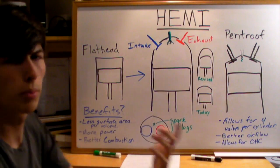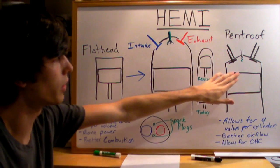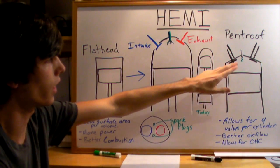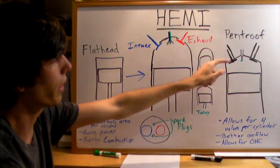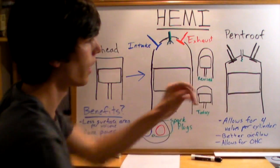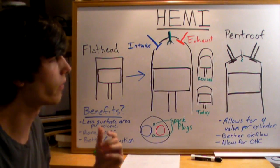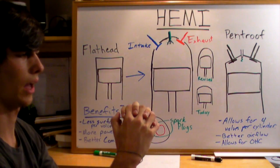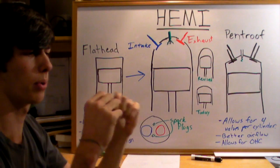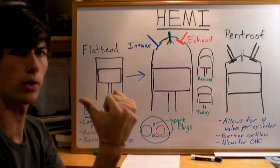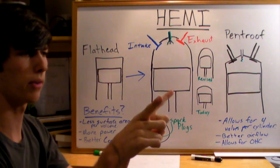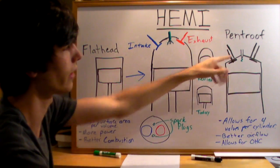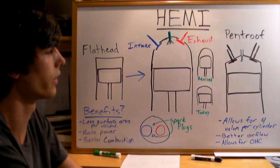Now, what do most cars today have? Well, most cars today are going to be using a pent roof design, and there are many reasons for that — it's actually a better design. A pent roof design is like a triangle, and it allows you to have four valves per cylinder. Think of a dome — like half of a sphere — and you want to put four valves in it. It's very difficult to do; your valve positioning is going to be very awkward. With a pent roof design, it's real simple. They just line them up and you can have four valves per cylinder.